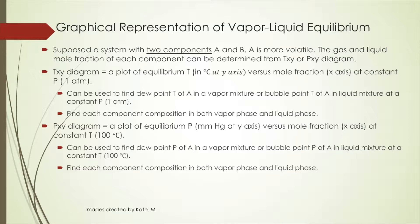It can also be at 0.5 atm. The Txy diagram can be used to find the dew point temperature of species A in a gas mixture or the bubble point temperature in a liquid mixture at constant pressure. It can also be used to find each component's composition in both the vapor phase and liquid phase.